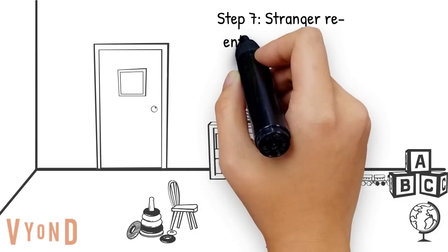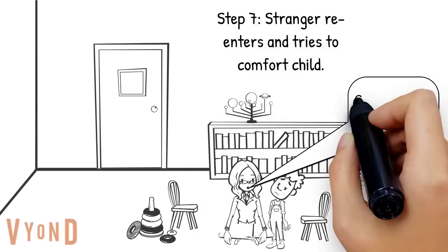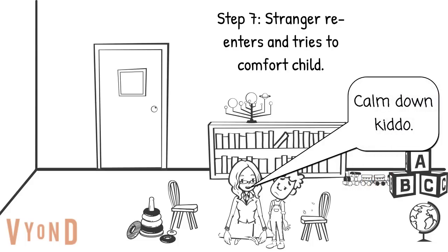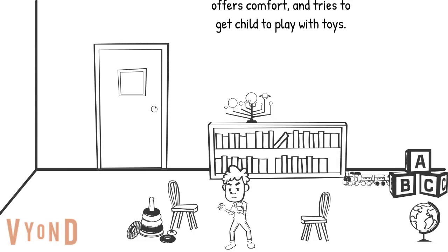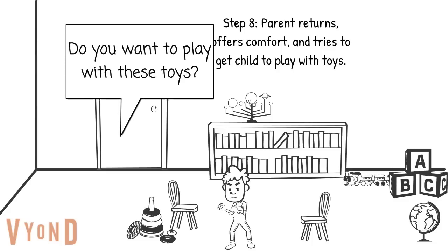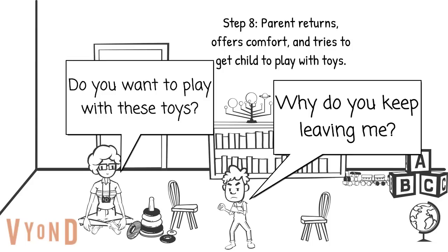In step seven, the stranger re-enters and tries to comfort the child. Researchers look to see if the child is able to be soothed by a stranger. In step eight, the parent returns to the room, tries to comfort the child, and introduces some toys. Researchers observe how the child reacts to the reunion — is the child angry at the parent for leaving, or happy to see the mother?